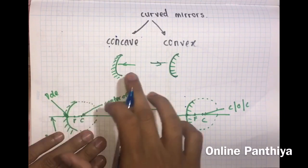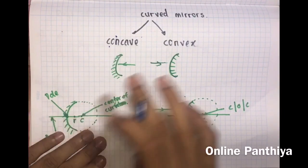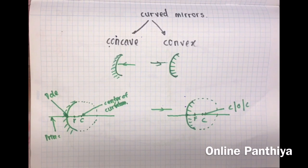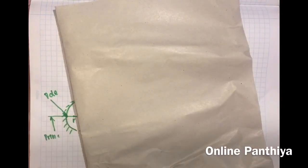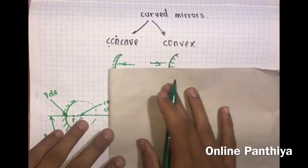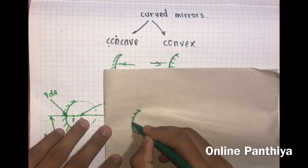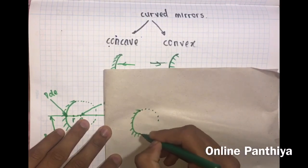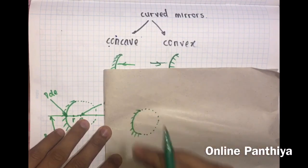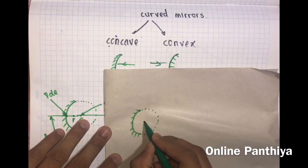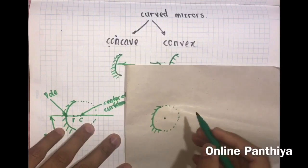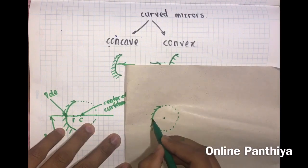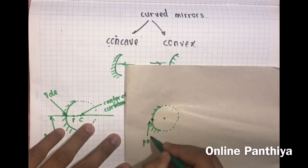The rays fall towards the curved side on the concave mirror, and on the convex mirror the rays fall on the other side. Now, since this mirror is like a part of a sphere, I'm going to draw the sphere. The center of the sphere is called the center of curvature. The center of the mirror is called the pole. All these things are marked here.